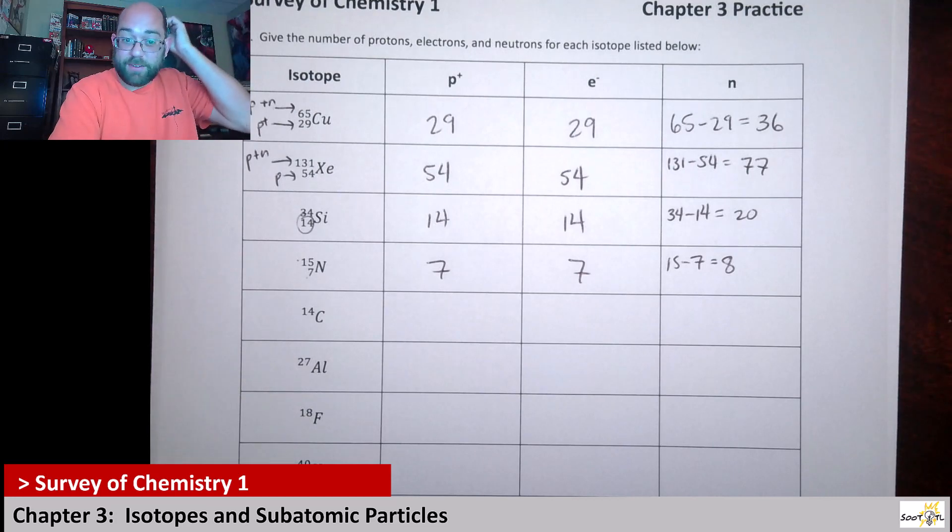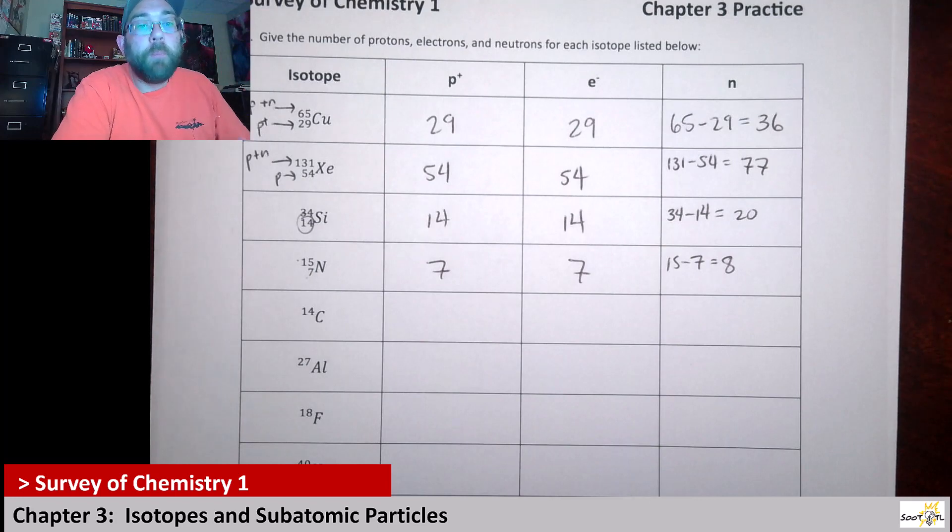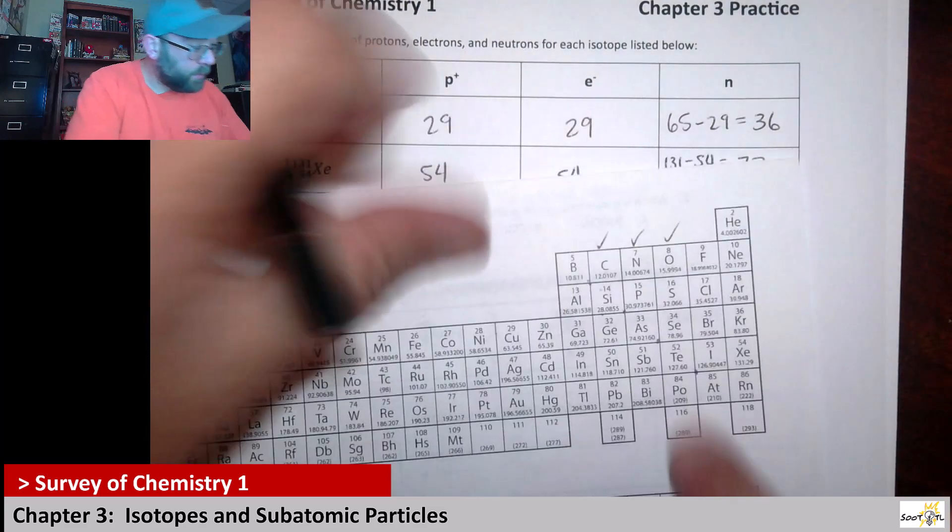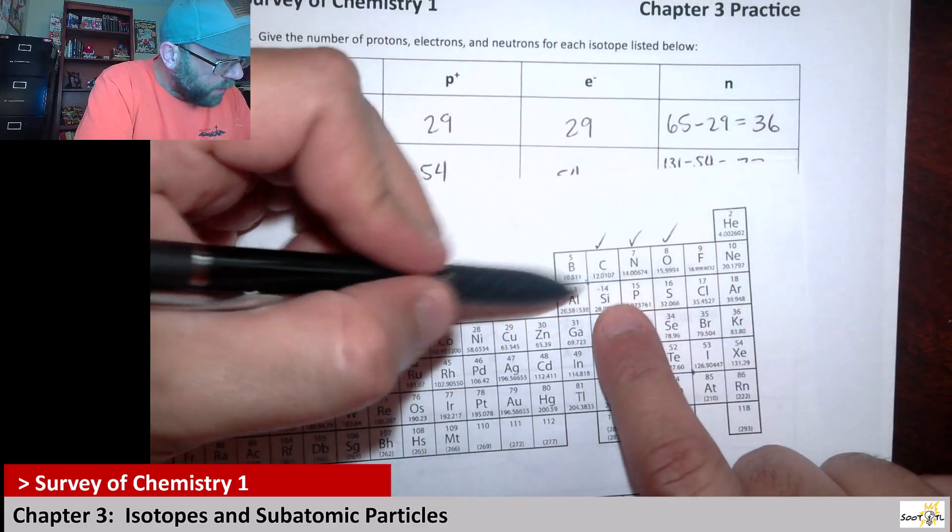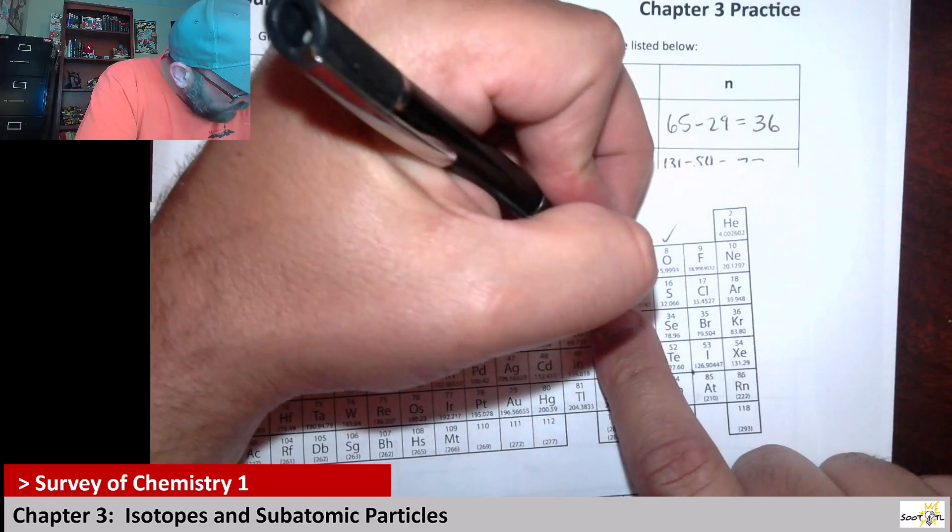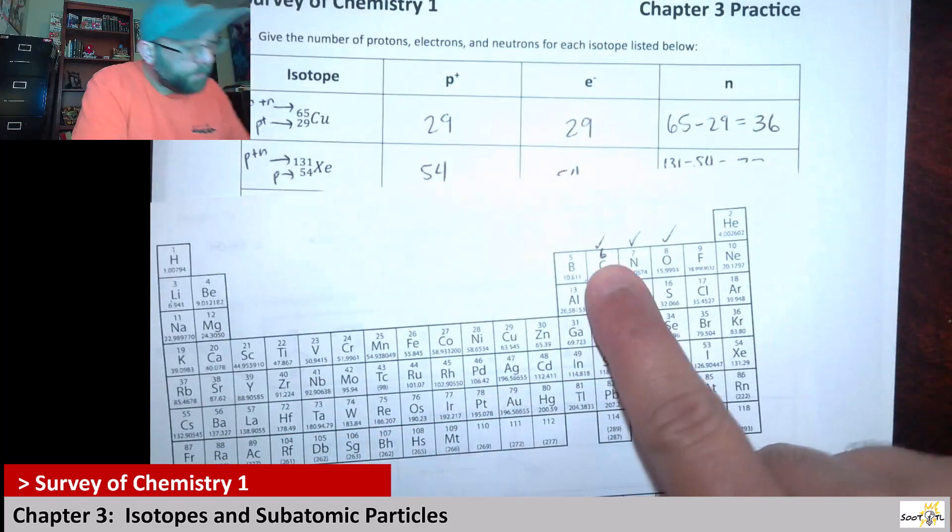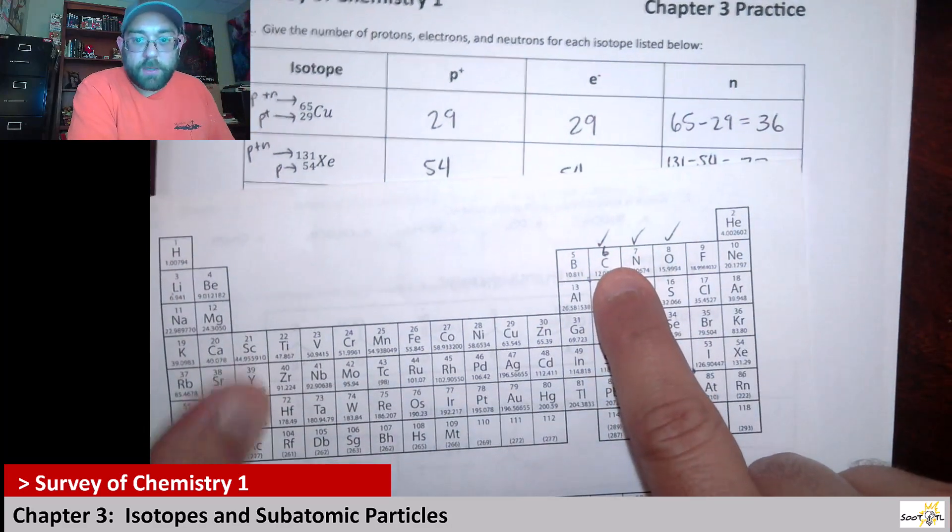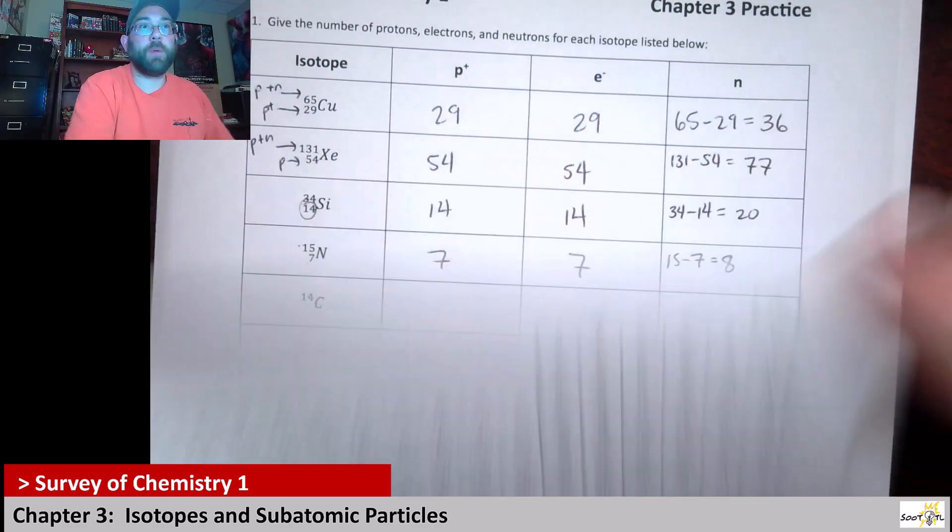Now if we look at these last four, these guys don't actually give us that bottom number - they don't give us our proton count. But remember what I said in the beginning: the symbol tells us the proton. This is a carbon atom, so carbon atoms have six protons.